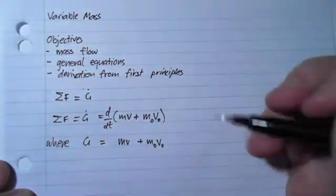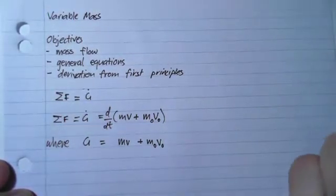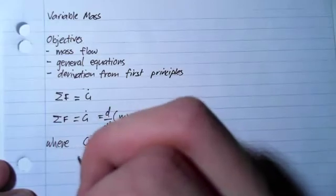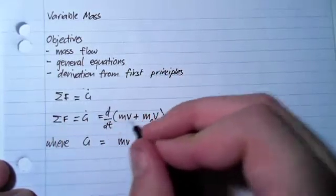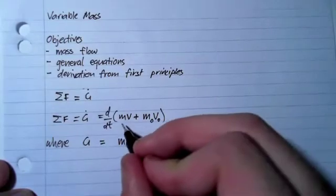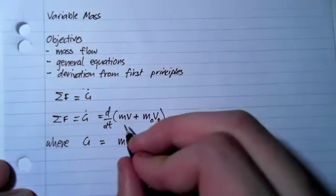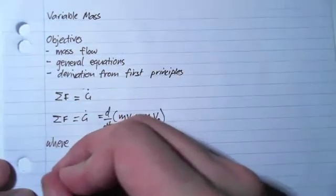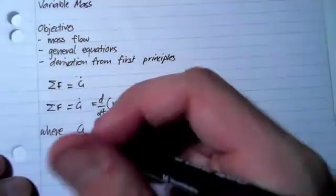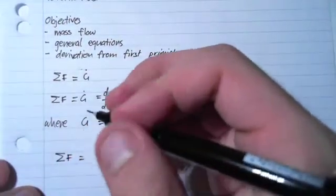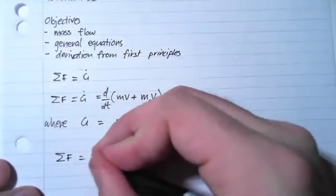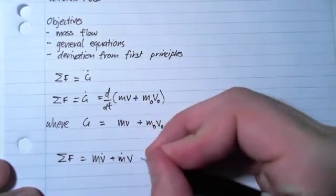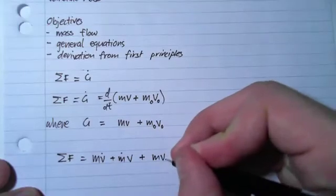If we take this derivative and we have an unknown value, we'll do an example after this, but this is just purely mathematical at the moment. If we take the time rate of change of these two values here, we end up having to use the chain rule. So we end up getting equals mv dot plus m dot v plus m₀v₀ dot.